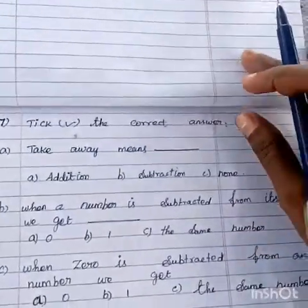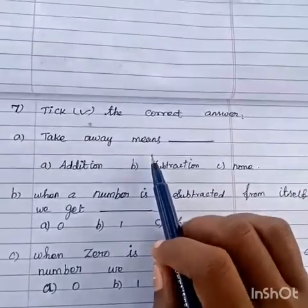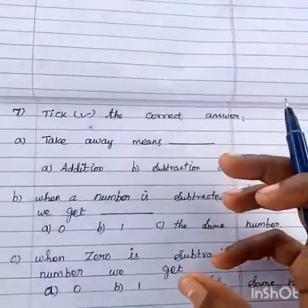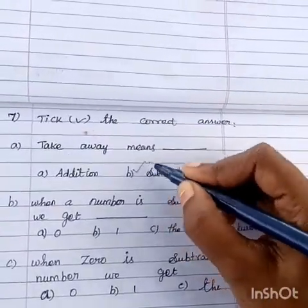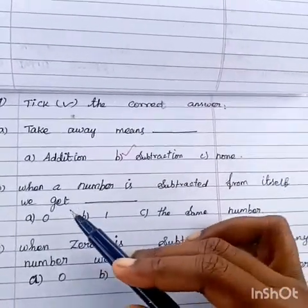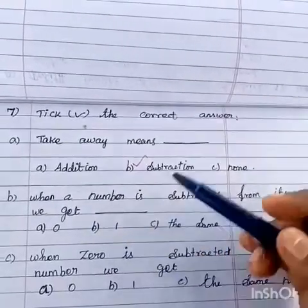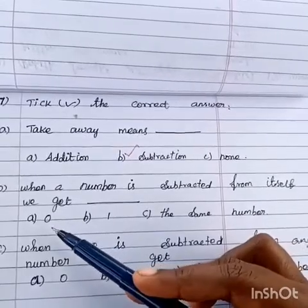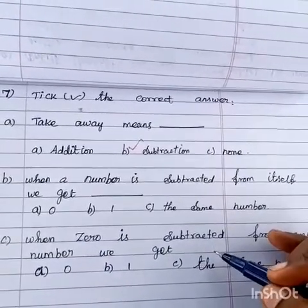Then, one more question. Tick the correct answer. Take away means. We already have take away, to take away. We can take away numbers. So, the answer is to subtract. When a number is subtracted from itself, we get. The answer is 0, 1, the same number. The answer is same number.